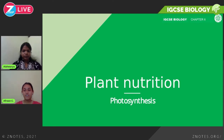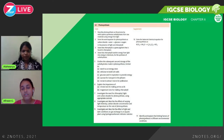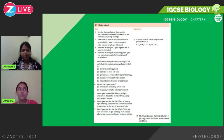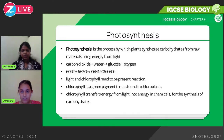Chapter 6 is about plant nutrition and the first part focuses on photosynthesis. Looking at the syllabus, we'll cover what photosynthesis is, the word and chemical equations for photosynthesis, the chemical chlorophyll and its purpose, the products of photosynthesis and their uses, the different minerals required for plant survival, and something called limiting factors.